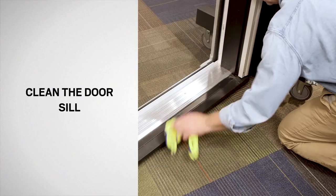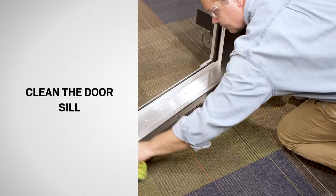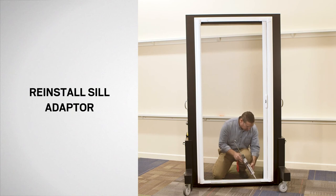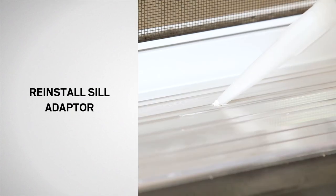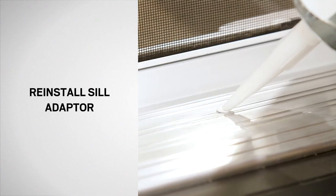Next, thoroughly clean the door sill. From the interior of the screen assembly, apply sealant into the pre-drilled holes until sealant overflows onto the door sill surface.